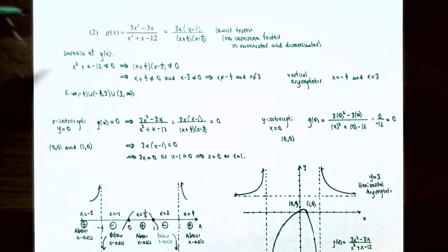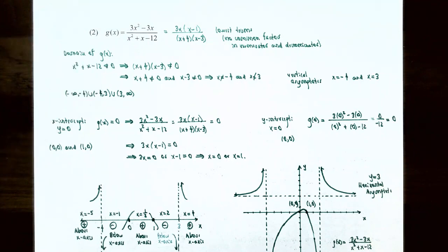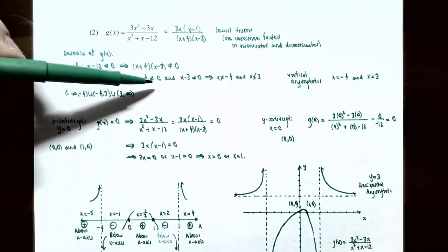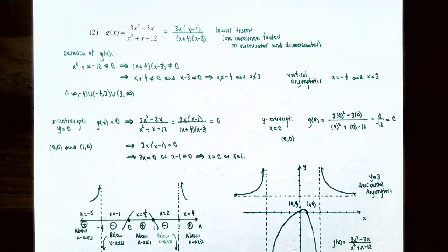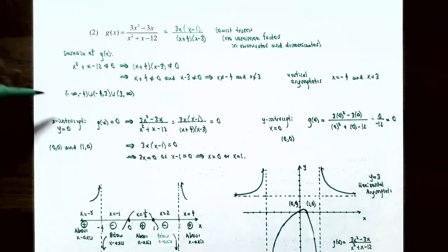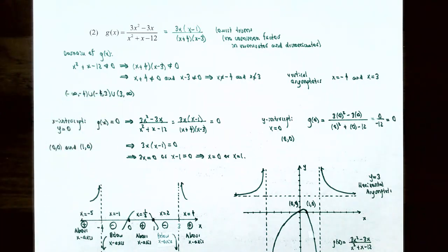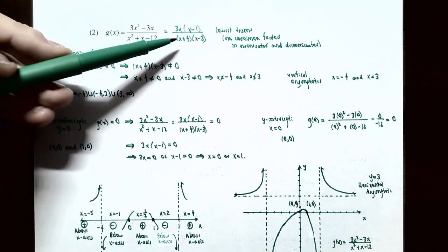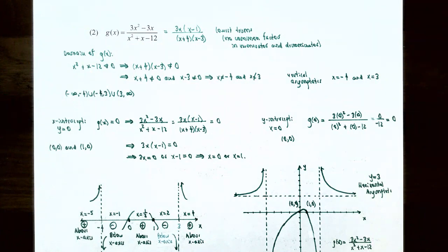For the domain, the denominator (x + 4)(x - 3) cannot equal zero, so x ≠ -4 and x ≠ 3. The domain in interval notation is (-∞, -4) ∪ (-4, 3) ∪ (3, ∞). Since there are no common factors, there are no holes in the graph. However, x = -4 and x = 3 make the denominator zero, so x = -4 and x = 3 are vertical asymptotes.